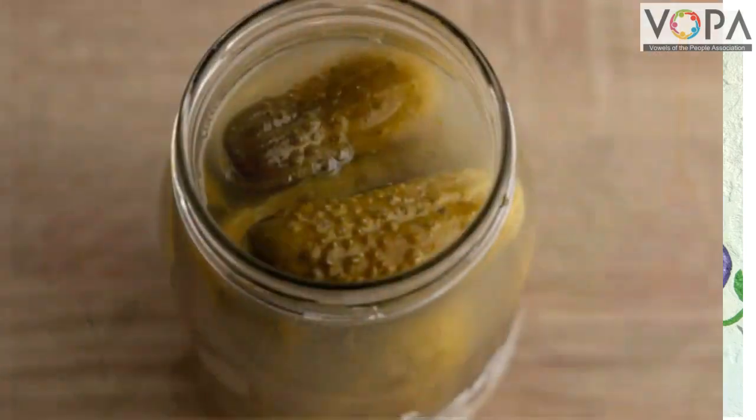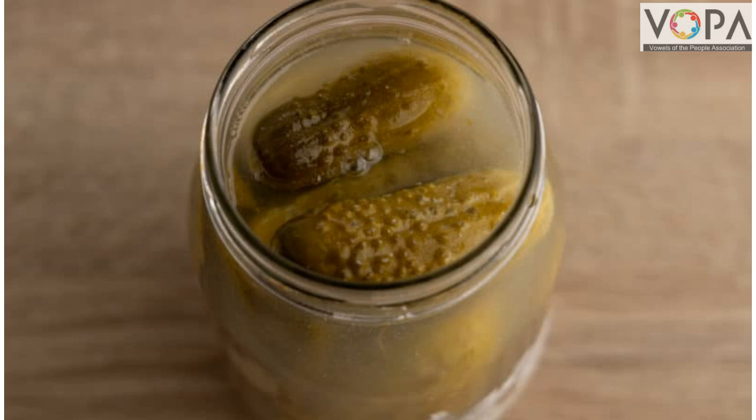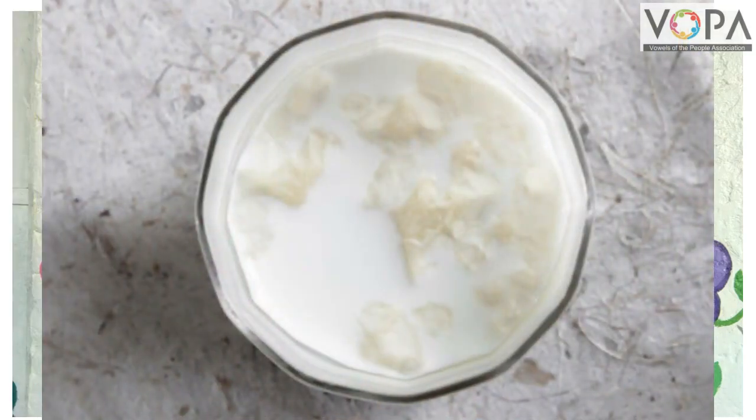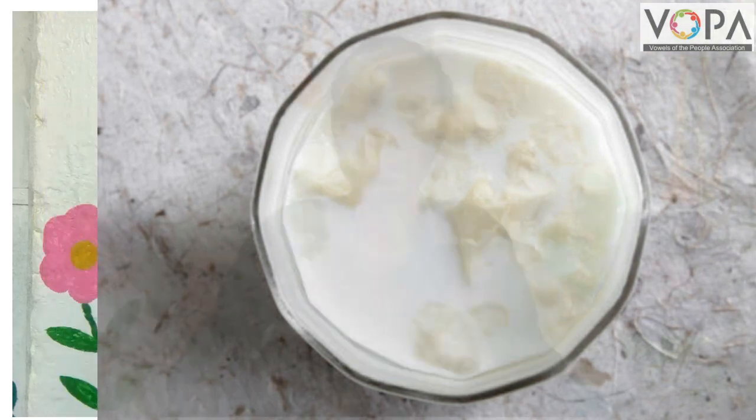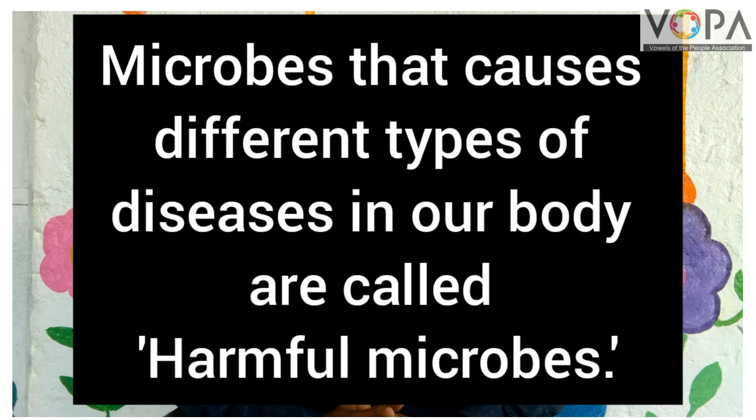In this video we will learn about harmful microbes and pathogens. When we open a jar of pickle we see that there is a black layer appearing on it. In summer days, milk and meat get spoiled after some time. Harmful microbes are microbes that cause different types of diseases in our body.